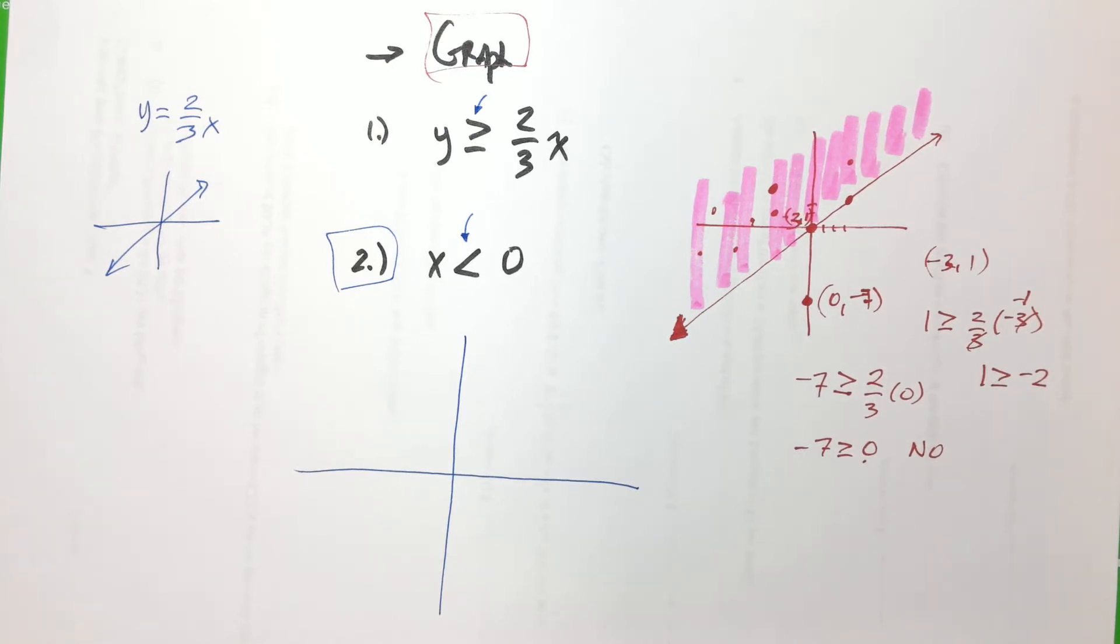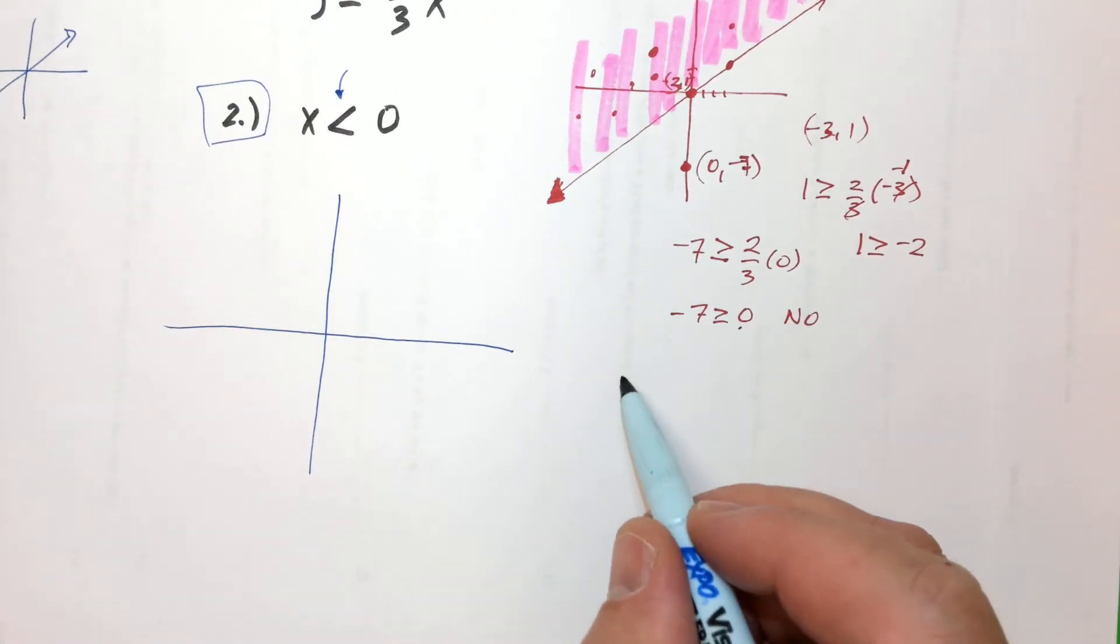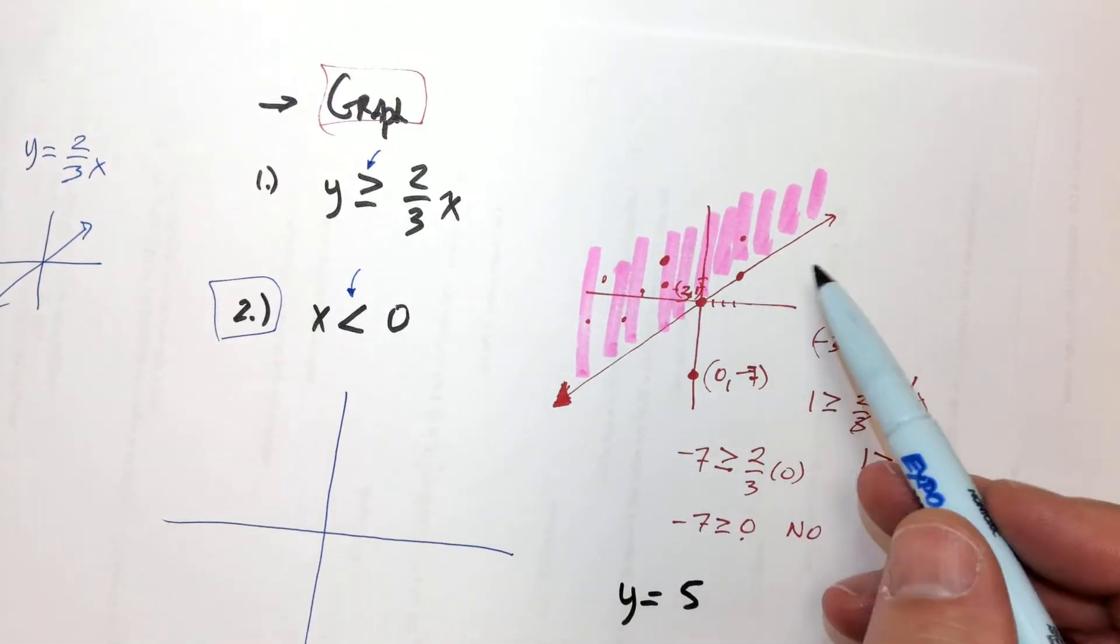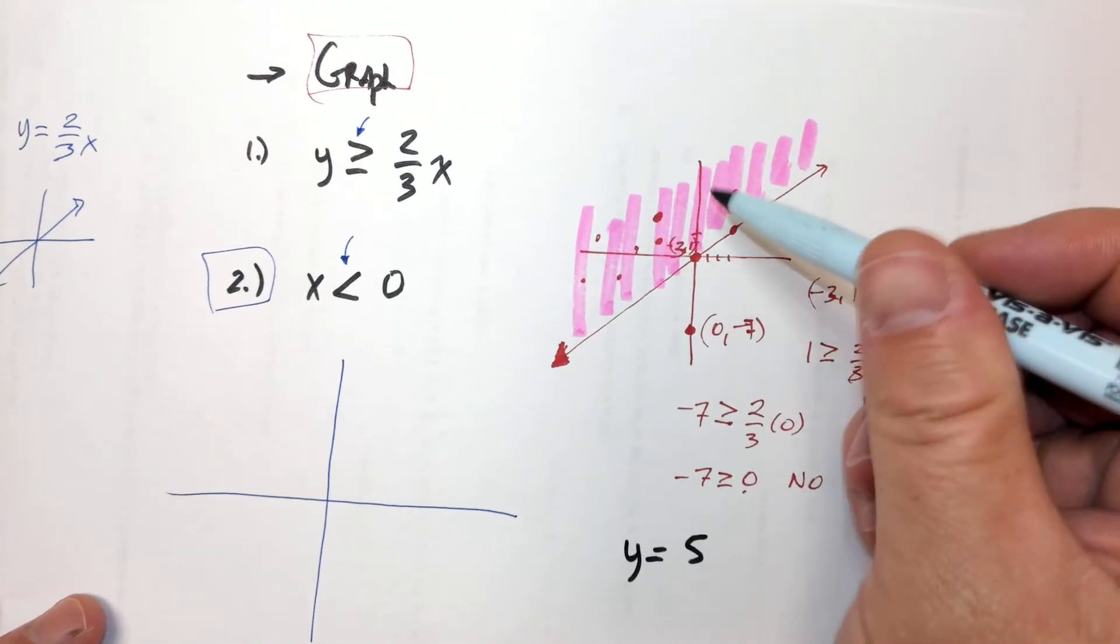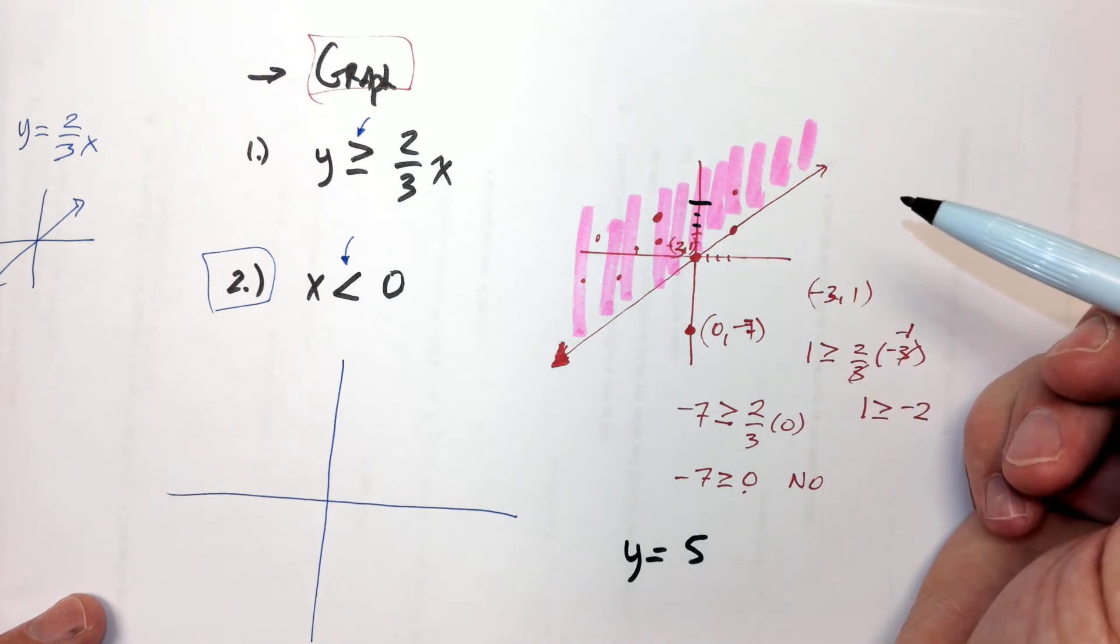Actually, watch, check this out. Let's back the truck up a little bit. Let's do y equals five. Let's graph y equals five on this line right here. Oops, sorry. So y equals five. That's one, two, three, four. That would be y equals five right there, right?